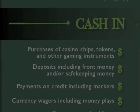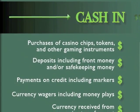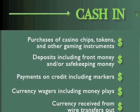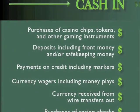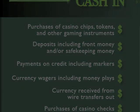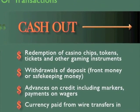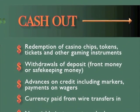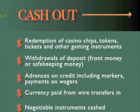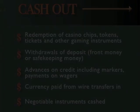Cash-in transactions include purchases of casino chips, tokens, and other gaming instruments, as well as deposits including front money and safekeeping money. Cash-out transactions include redemption of casino chips, tokens, tickets, and other gaming instruments, as well as withdrawals of deposit, front money, or safekeeping money.